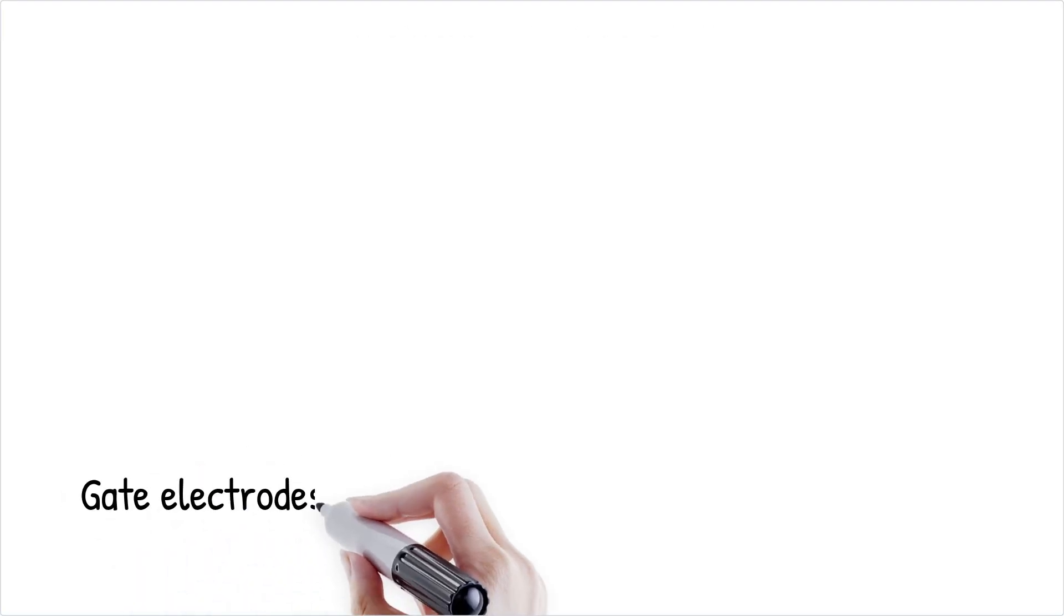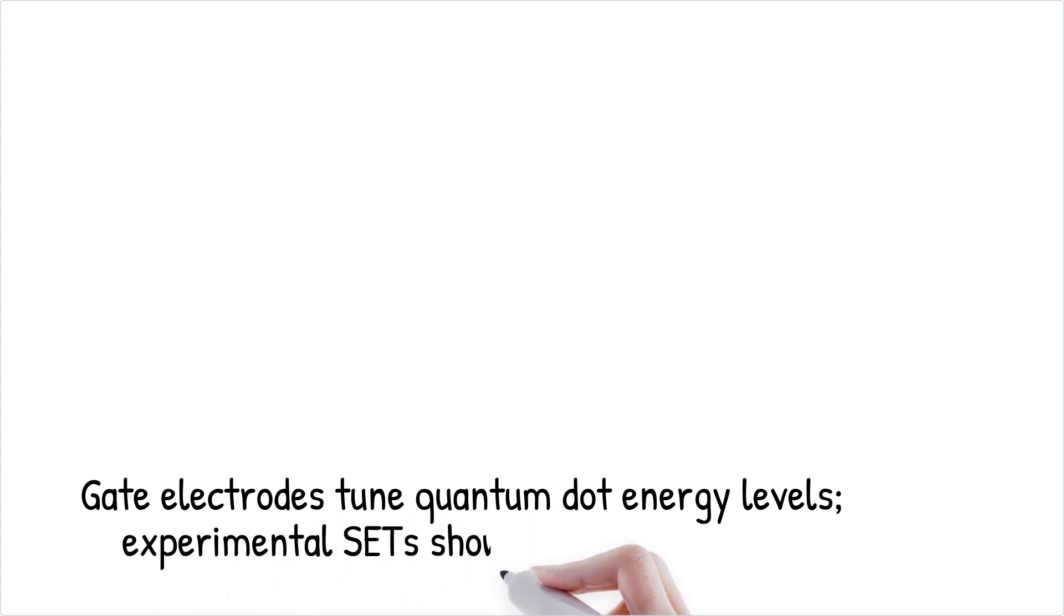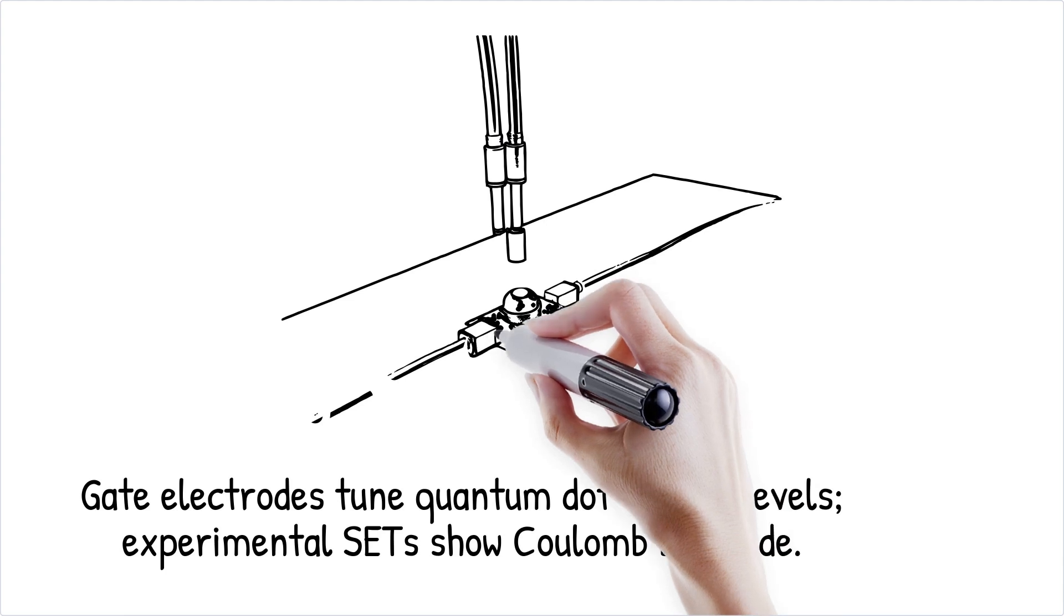Gate electrode control: The voltage on a nearby gate electrode finely tunes the energy levels of the quantum dot, enabling the transistor to switch on or off.